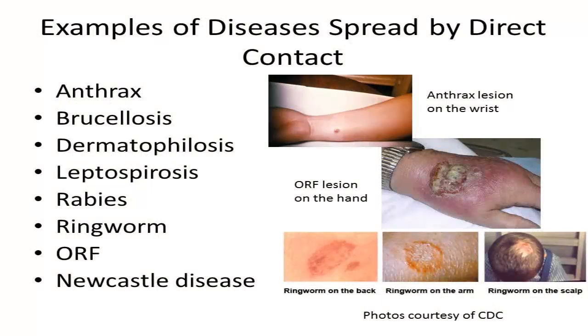Listed here are examples of diseases that a person can become infected with via direct contact with infected livestock or poultry, or in some cases via direct contact with a fomite that has been in contact with an infected animal.